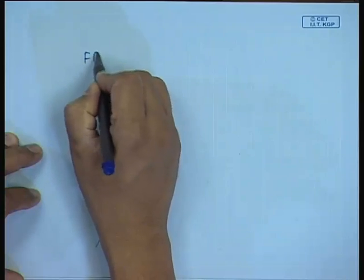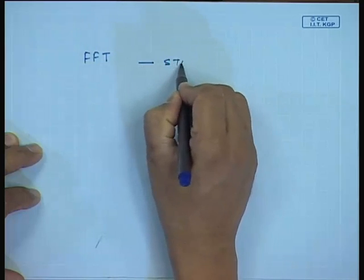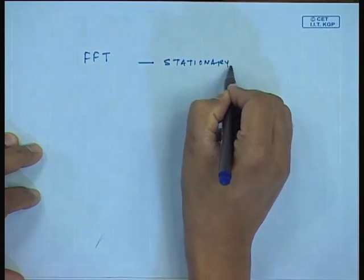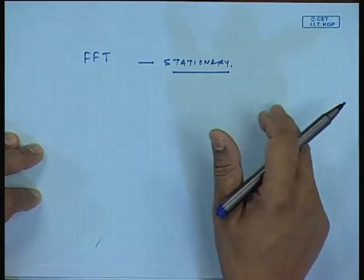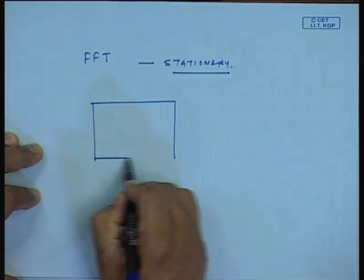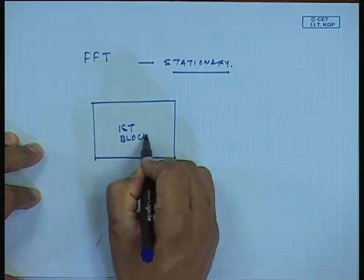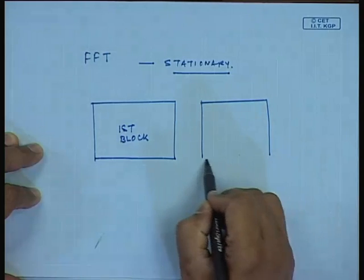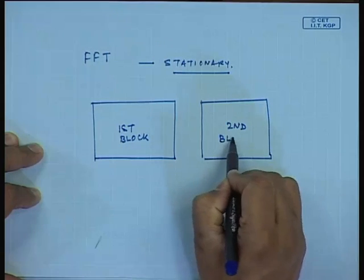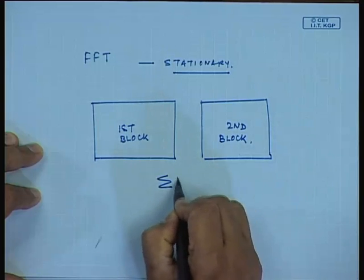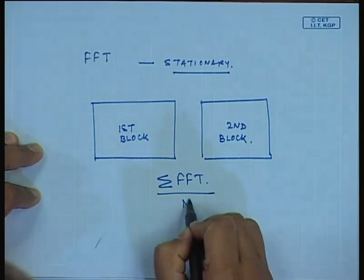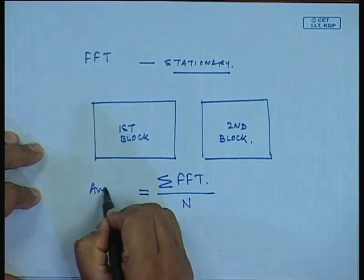One thing you will realize when we are going to do FFT is we always assume that the signal is stationary, but the process of FFT takes some time. What would happen if the signal was varying the instance you are doing the FFT? If you are doing a number of FFTs, you take the first block of data, and the second block is also being digitized and ready for FFT. You will then be doing an average FFT — a summation of all the FFTs divided by the number of FFTs.